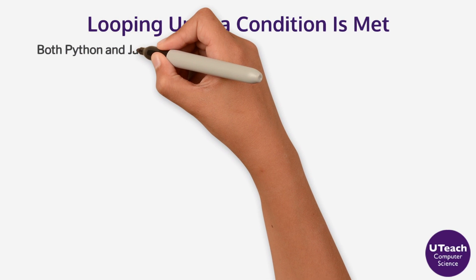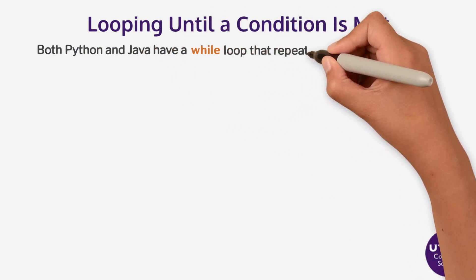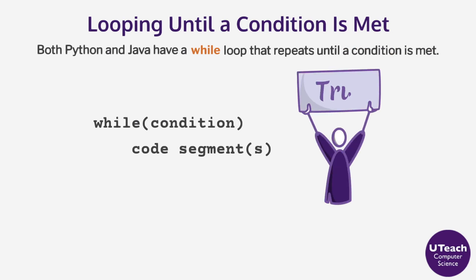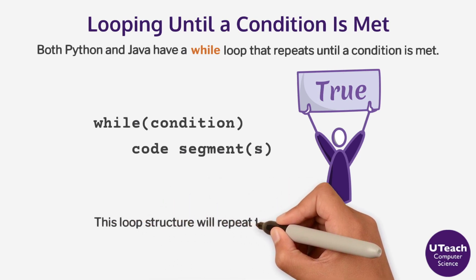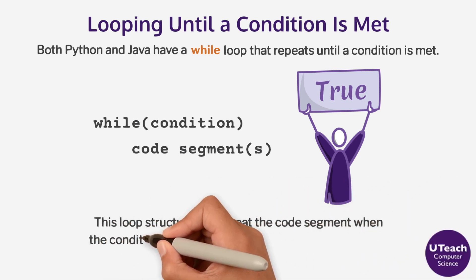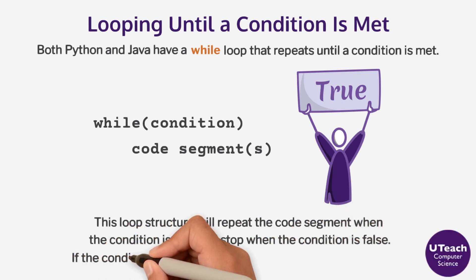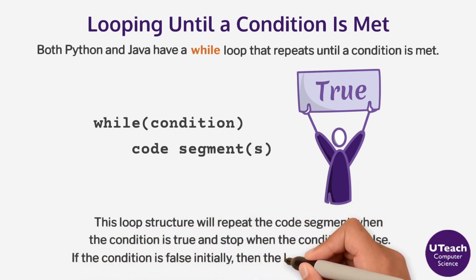Both Python and Java have a while loop that repeats until a condition is met. This loop structure will repeat the code segment when the condition is true and stop when the condition is false. If the condition is false initially, then the loop will never execute.